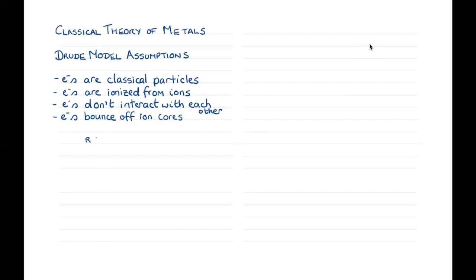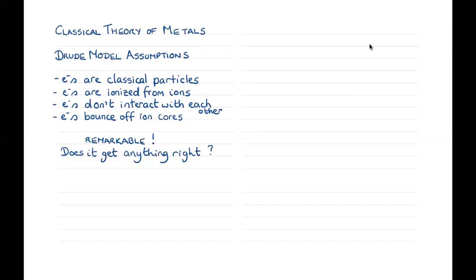If you stop and think about this for a moment, this is a really remarkable set of assumptions — not just that we're assuming electrons are classical, which we know is not correct, but also that they're non-interacting. We know they're negatively charged and should interact via Coulomb interaction, but in the Drude model we assume they don't. And so we might ask: does this model get anything right? And of course it does — it was a very successful model for many years before quantum mechanics. We'll work through examples of physical properties: some the Drude model can predict, and some it cannot, to motivate our extension to quantum mechanics.